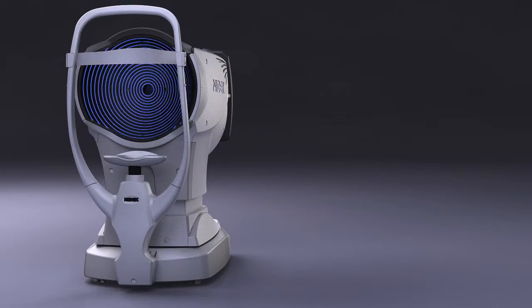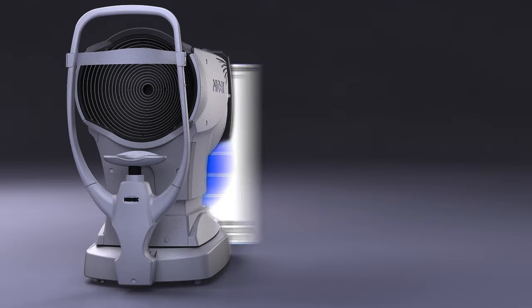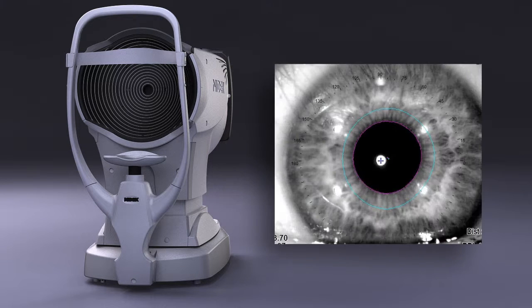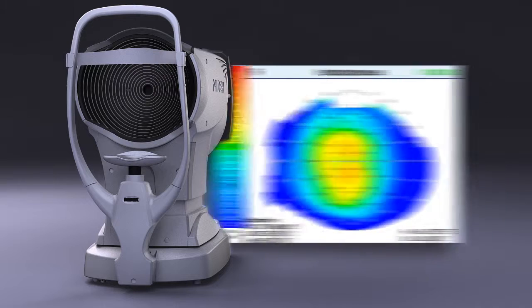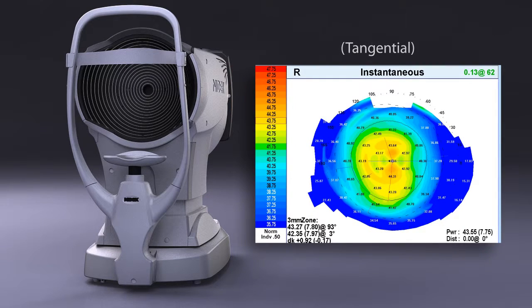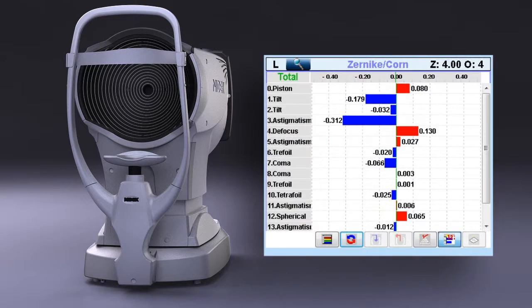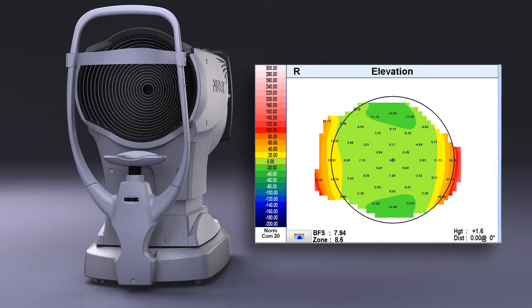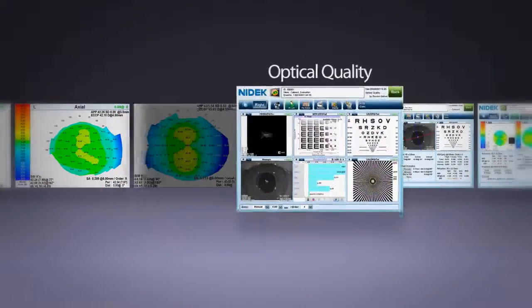The blue light corneal topography provides you with keratometry, photopic pupil, axial, instantaneous, tangential, gradient, Czernicke graphs, and elevation maps.